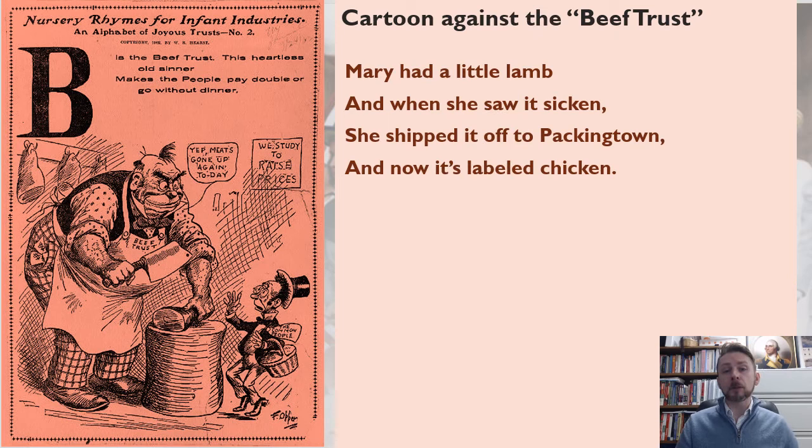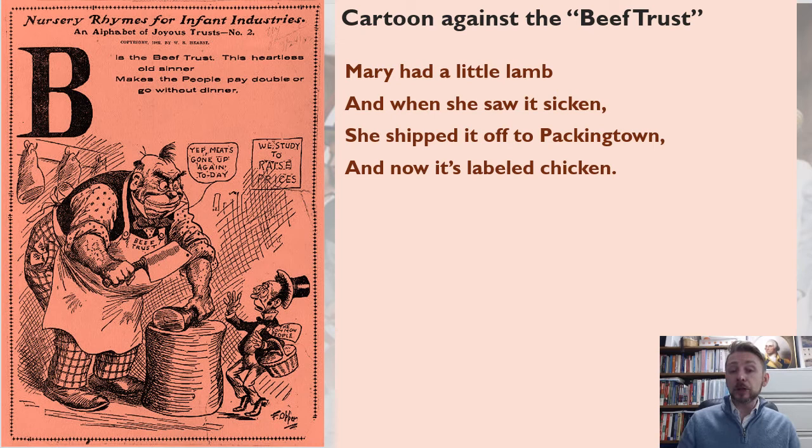Americans not only complained about the safety of their food in terms of its composition and danger to folks, they also complained about prices. There's a cartoon where the beef trust is charging high prices for products that are adulterated and not good for you. A popular cartoon of the time went: 'Mary had a little lamb, and when she saw it sicken, she shipped it off to packing town and now it's labeled chicken.'